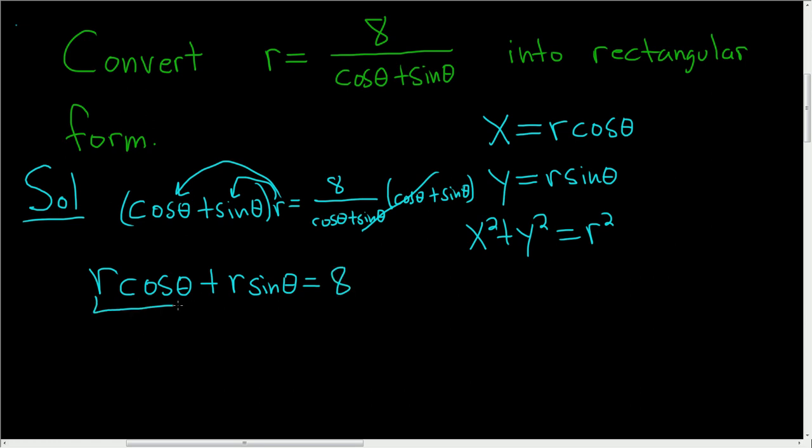r cosine theta is x, and r sine theta is y. So we end up with x plus y equals 8. And that's the final answer.